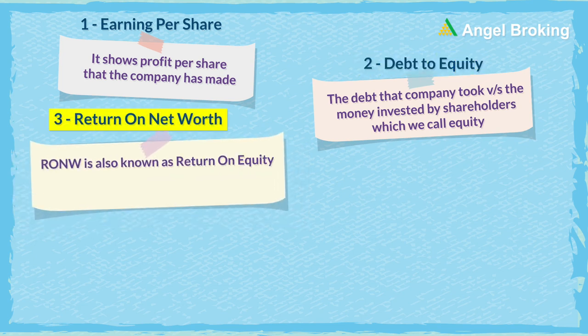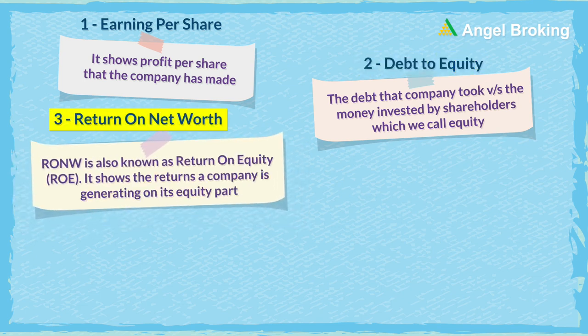The next ratio is Return on Net Worth, RONW, also known as Return on Equity, ROE, which shows the returns a company is generating on its equity part.